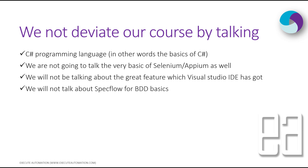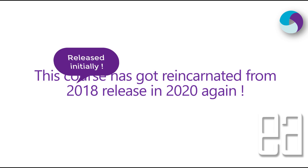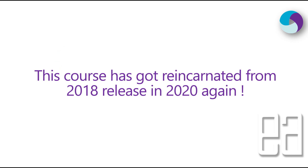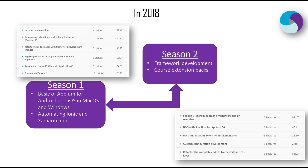The breaking changes happening in SpecFlow in the later part of the course — how I'm actually using those things — will all be covered, though we won't go into the most basic details of SpecFlow. Interestingly, this course has been reincarnated from its 2018 release in 2020. The course was originally released in 2018 as Season 1 and Season 2. Season 1 introduced Appium, automating hybrid Ionic applications, refactoring code, the page object model, automating native iOS on Mac, and a summary. Season 2 covered framework design overview, BDD and Appium extension implementation, custom config development, and refactoring of the complete code.